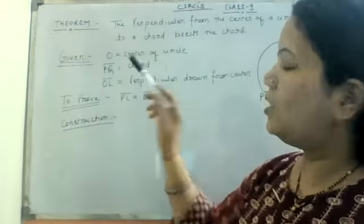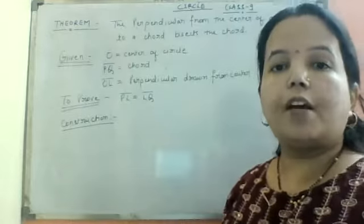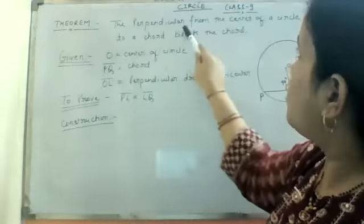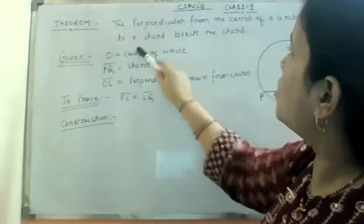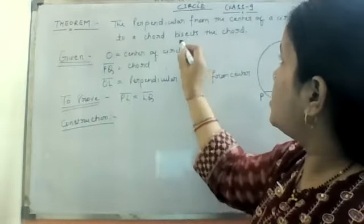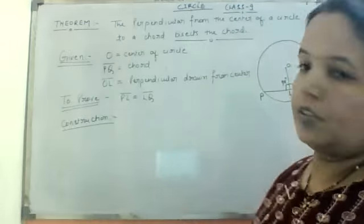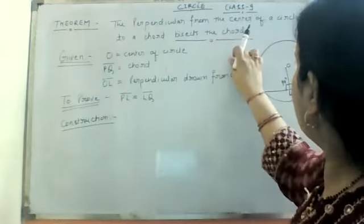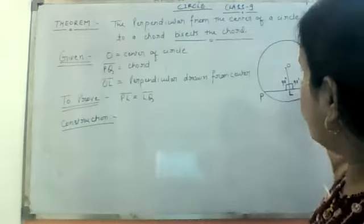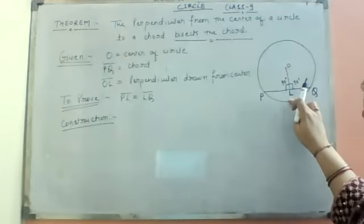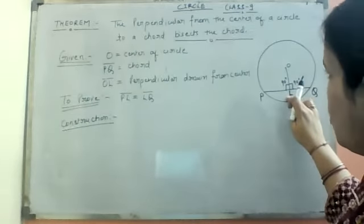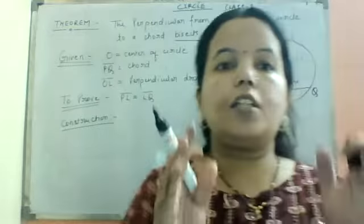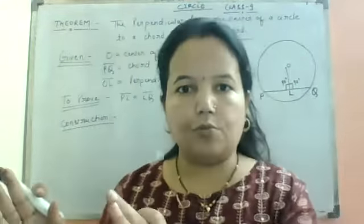Now, what do we have to prove? To find this, we have to read the theorem statement carefully. The perpendicular from the center of a circle bisects the chord. That is what we have to prove. OL is the perpendicular and L is the point where OL meets PQ. So we have to prove PL equal to LQ — meaning it is dividing the line into two equal parts.